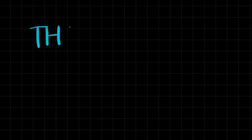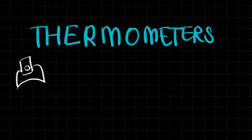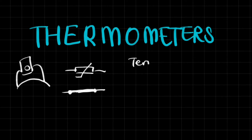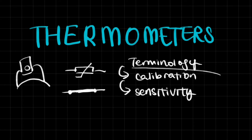Today we're going to talk about thermometers and the different types of thermometers. We have thermocouples, which are two wires, and resistance thermometers like thermistors and resistance wires. We're also going to talk about terminology that comes with thermometers like calibration, linearity, sensitivity, robustness, etc. And lastly, we're going to compare the different types as well.